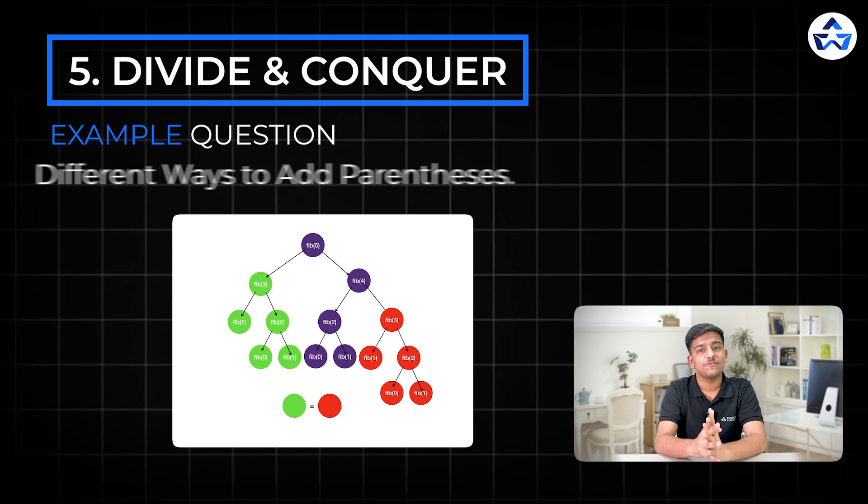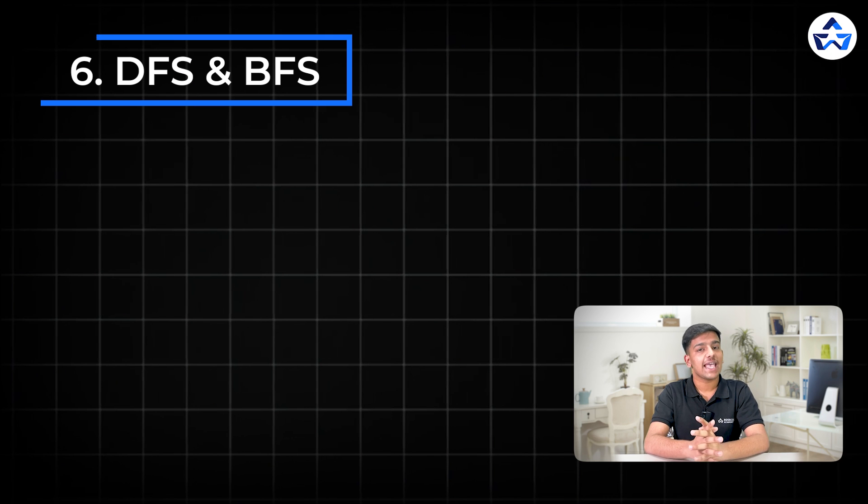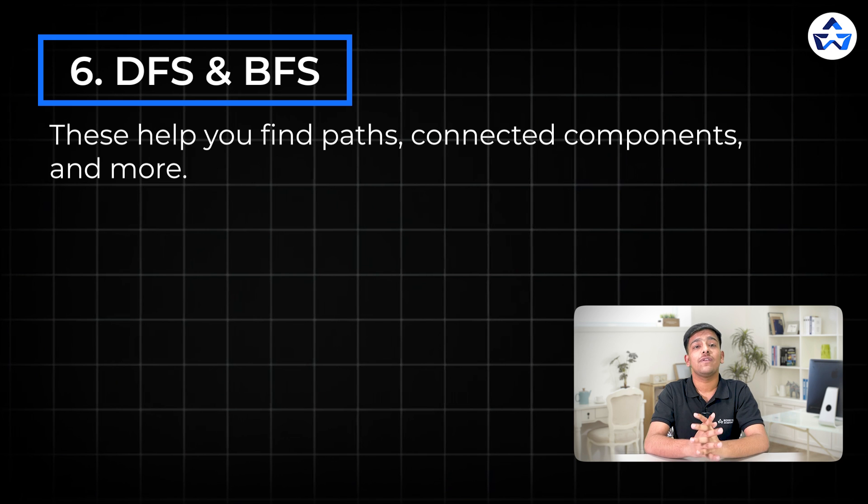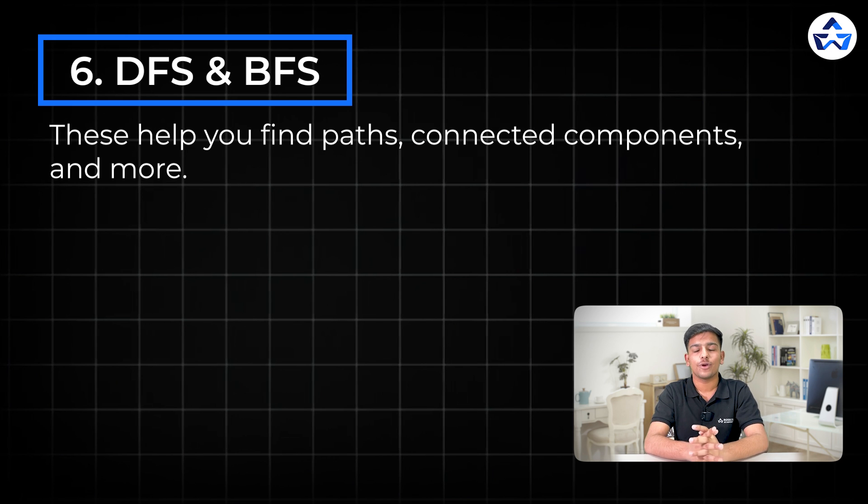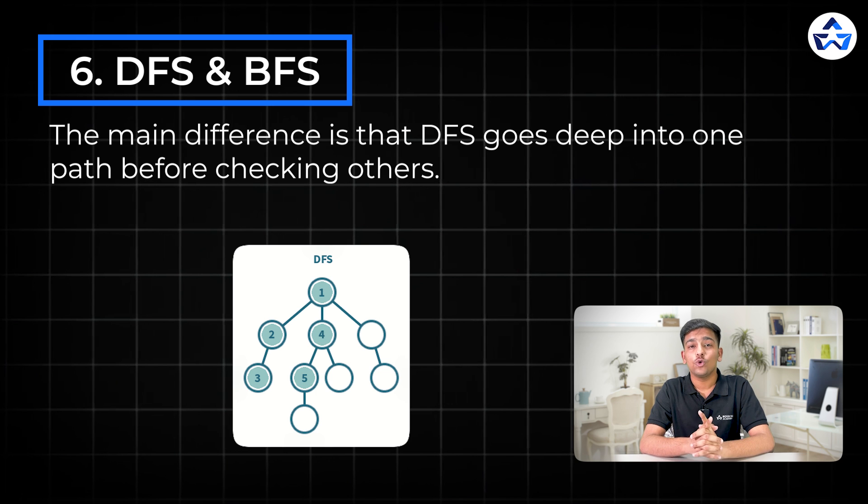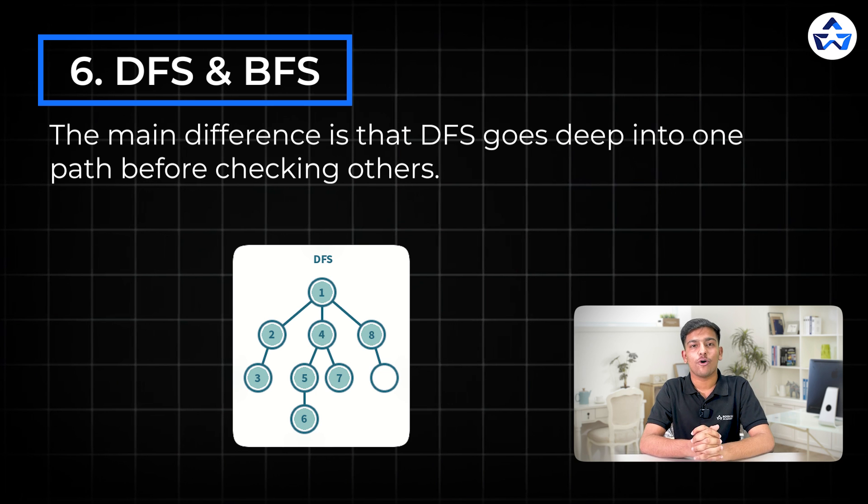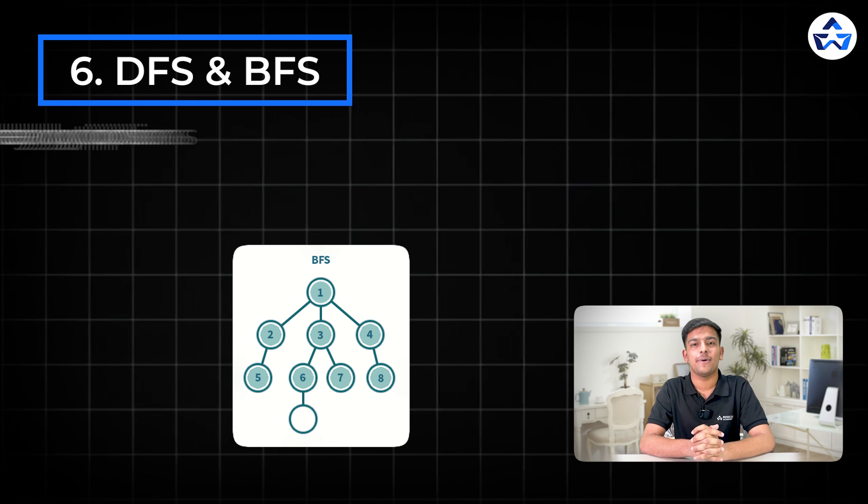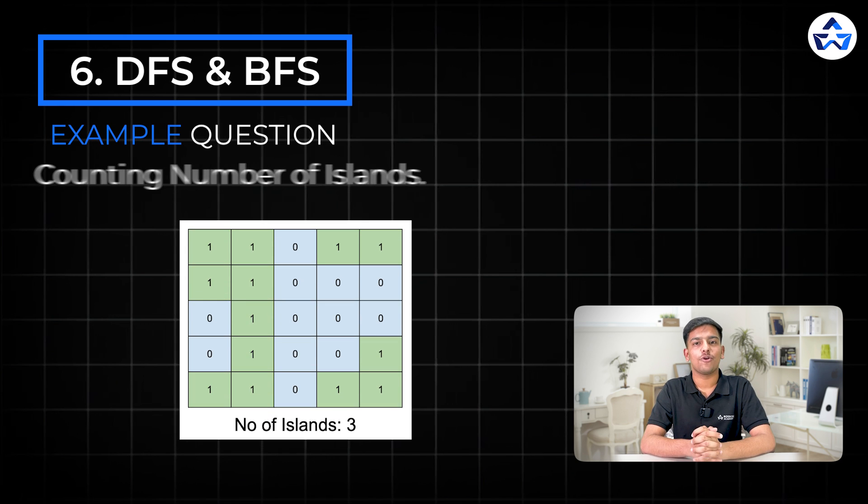So the sixth one is DFS and BFS. It's essential for traversing trees and graphs. This will help you to find paths, connected components and more. The main difference is that DFS goes deeper into one path without checking the nearby options while BFS checks all the nearby options first before going deeper. The example question is counting number of islands.